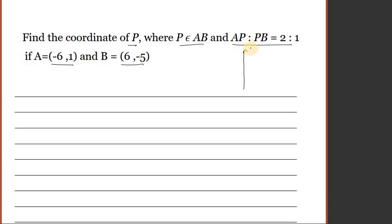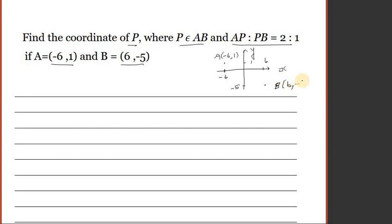So let's say this is the y-axis and this is the x-axis. So this point A is at (-6, 1), and this point B is at (6, -5). So this is the line segment, and P is somewhere in between — not exactly in the middle, it's closer to B.